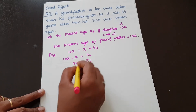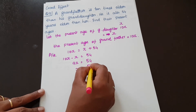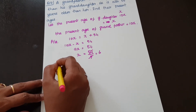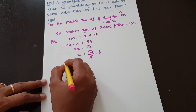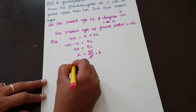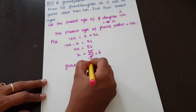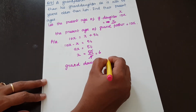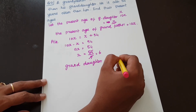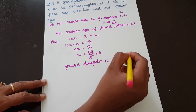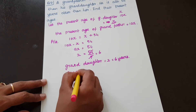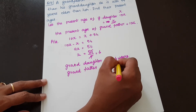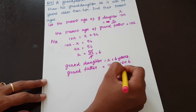So 9X = 54, therefore X = 54 ÷ 9 = 6. The granddaughter's present age is 6 years. The grandfather's age is 10X = 10 × 6 = 60 years.